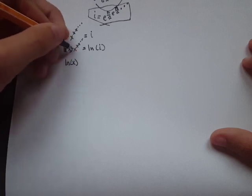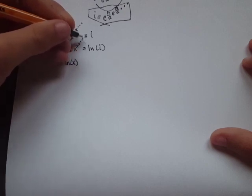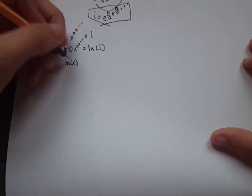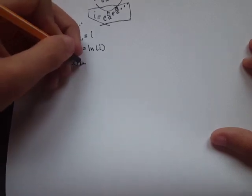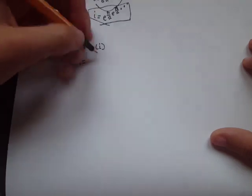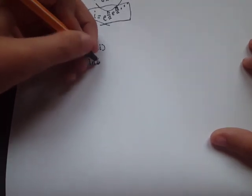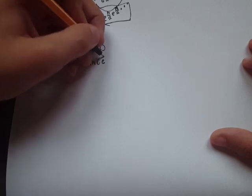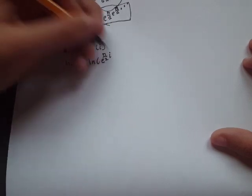Now this power tower, by definition, equals i, so natural log of x times i equals natural log of i. And natural log of i is the same thing as natural log of e to the π over 2 times i, because of what we found before.